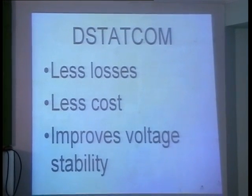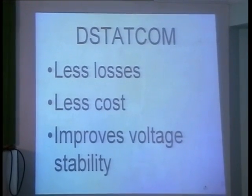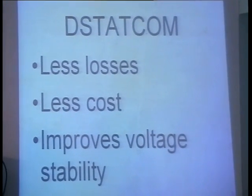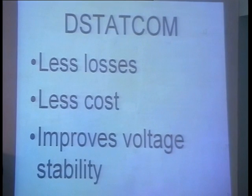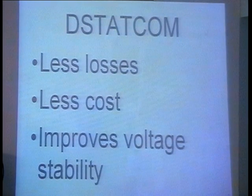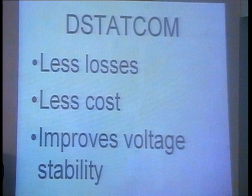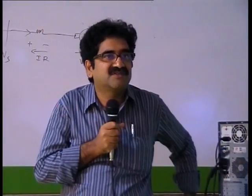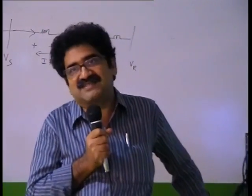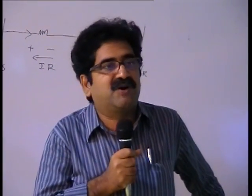The next FACTS device is STATCOM — Static Compensator. If used at a low voltage level such as 11 kV, 6.6 kV, or 400 V, it is called Distribution STATCOM (DSTATCOM). If used at 220 kV or 400 kV, it is a transmission-level STATCOM. A static compensator is the solid-state version of the synchronous condenser. We compare this with the synchronous condenser — another popular interview question: what is the difference between a synchronous condenser and a synchronous phase modifier?